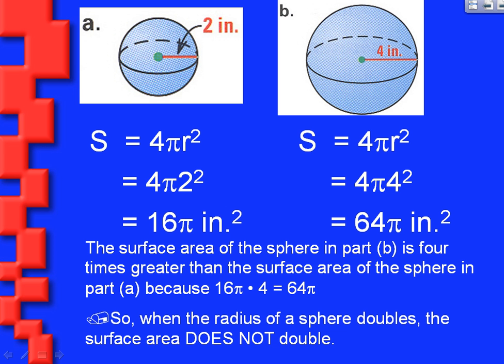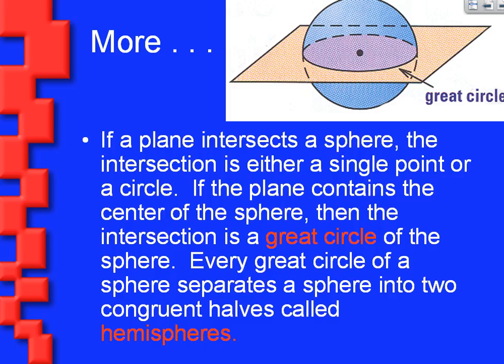If a plane intersects a sphere, the intersection is always a circle. If that intersection includes the center, we call it a great circle. All great circles are congruent — they have the same radius as the sphere. Every time we cut a sphere through its center, we always split it into two hemispheres — hemi just means half.